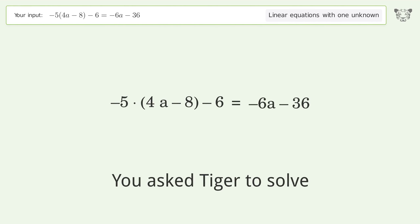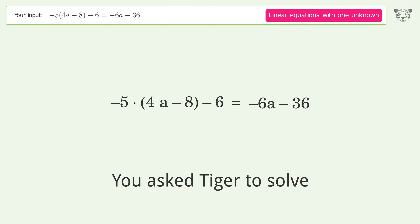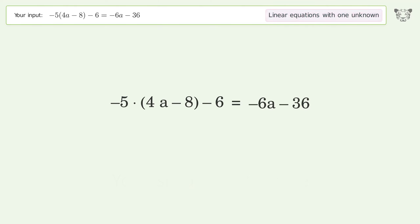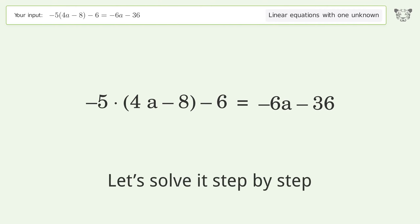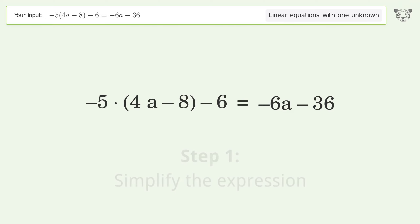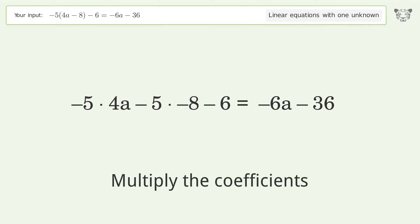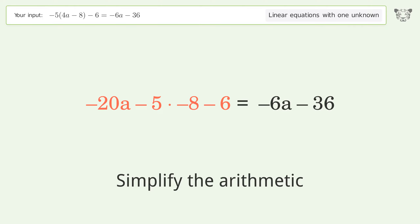Tiger is asked to solve a linear equation with one unknown. The final result is a equals 5. Let's solve it step by step: simplify the expression, expand the parentheses, multiply the coefficients, and simplify the arithmetic.